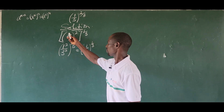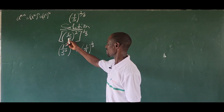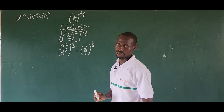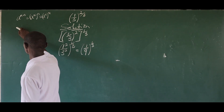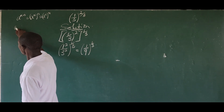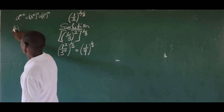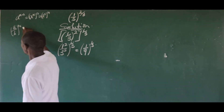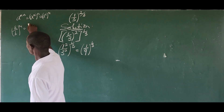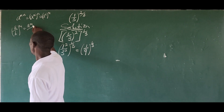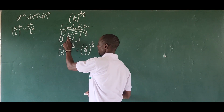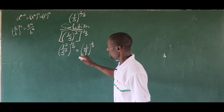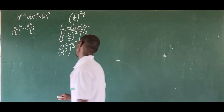We apply the law which says that if you have a all over b, all raised to the power of m, this is equal to a to the power of m, all over b to the power of m. That is the law we applied here, and we are going to apply that same law here.